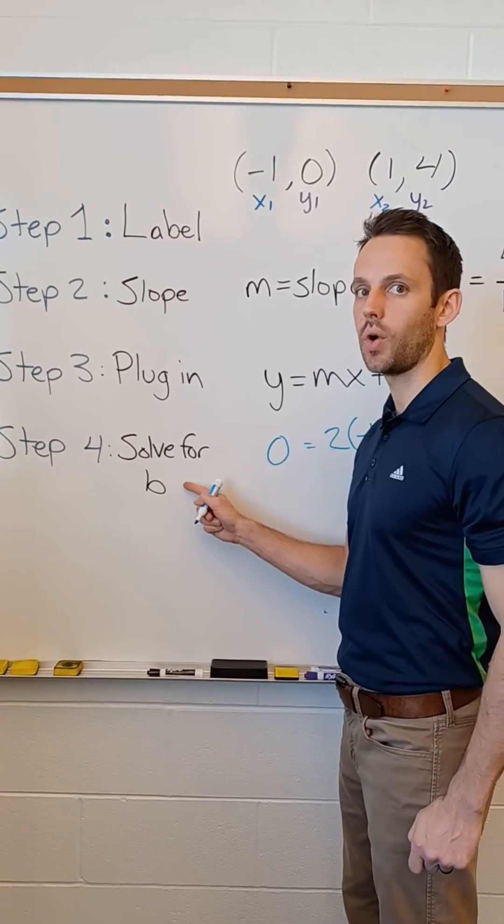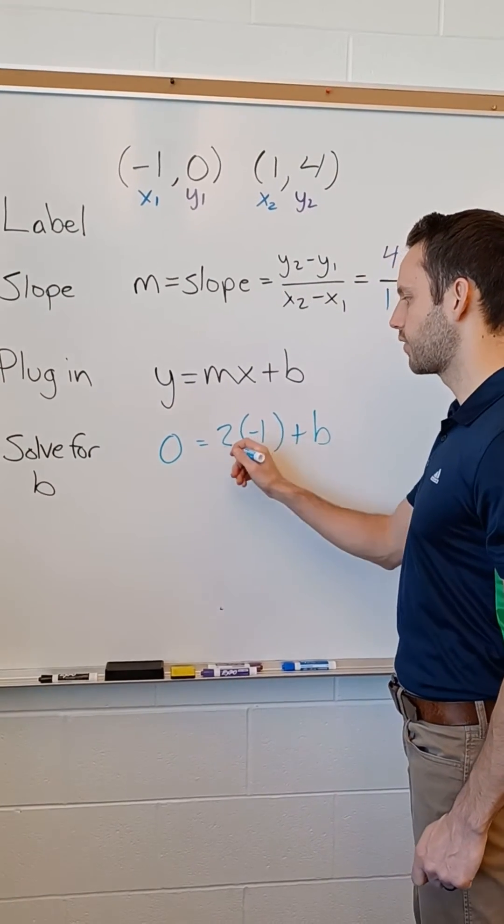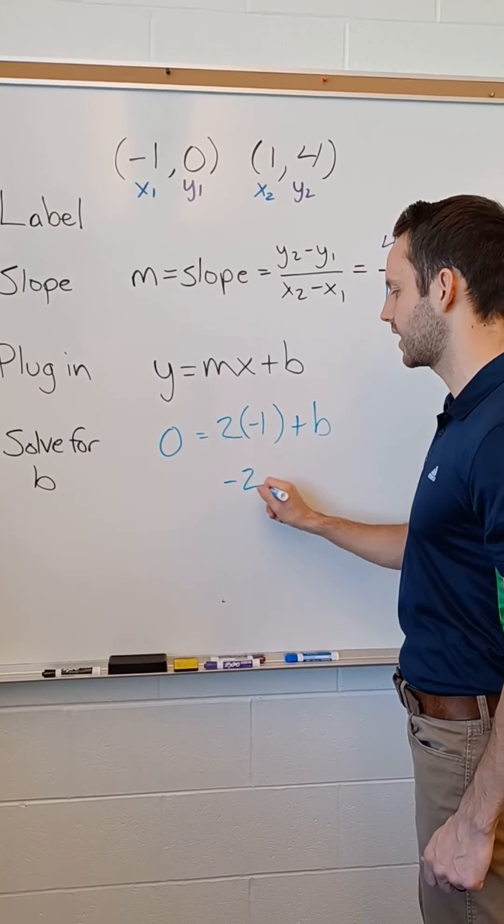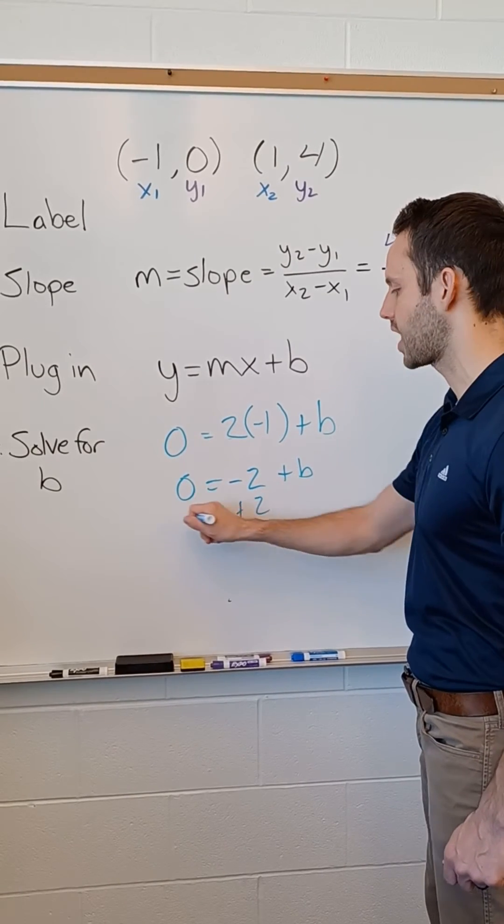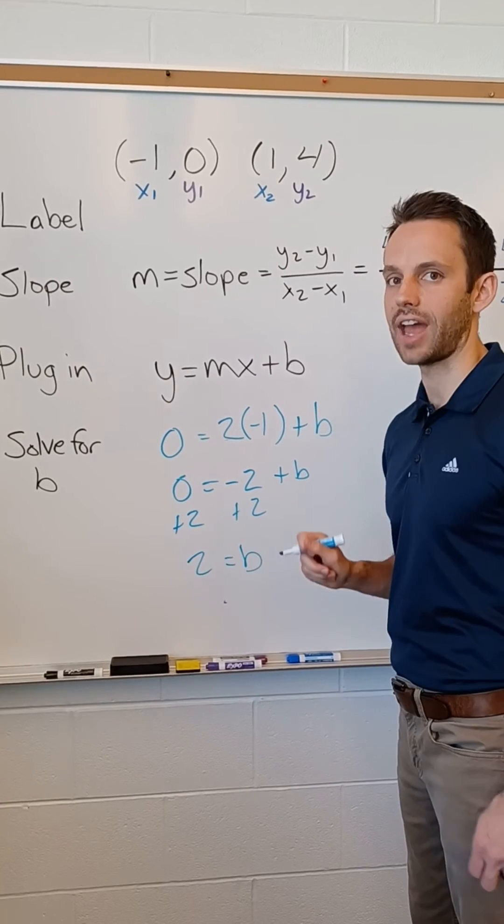Step four, solve for b. That's your y-intercept. We're going to simplify here. First, we do two times negative one. That gives us negative two. We have plus b on the right side. That equals zero. We need to move that negative two over, so we add two to both sides. That gives us b equals two. That's our y-intercept.